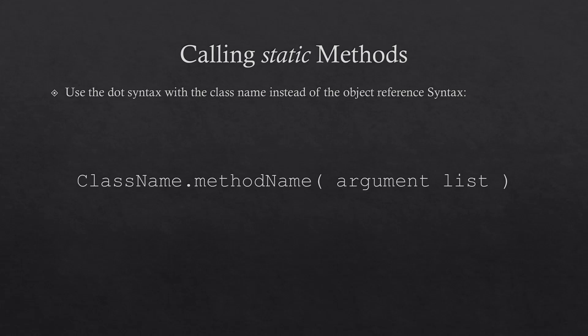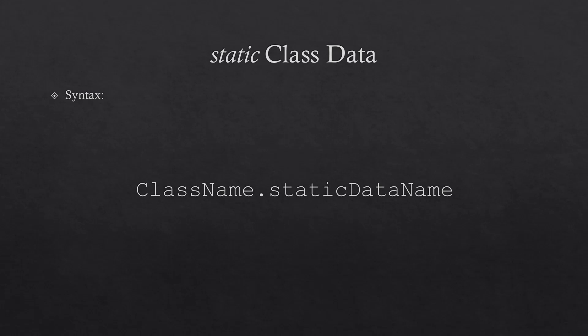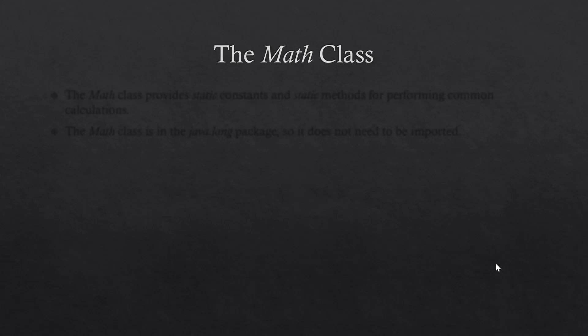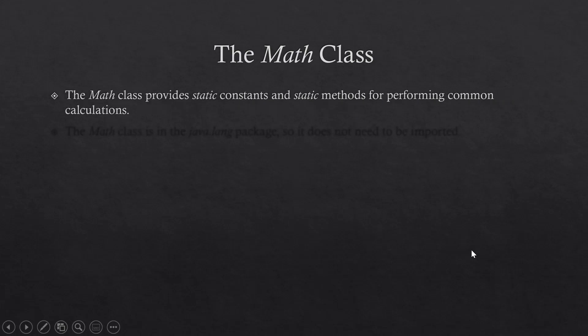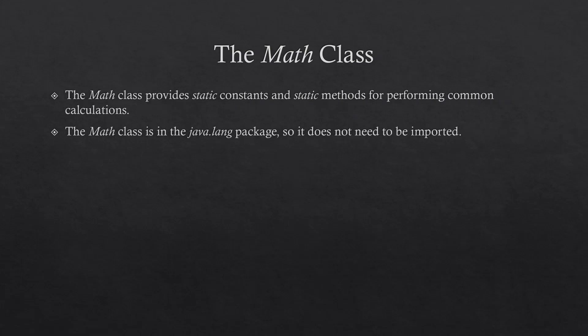Since methods are not the only members of our classes, we might also find some static class data. To access a static data element, we can use the class name dot the static data name. The Math class in Java provides us with static constants and static methods to perform common calculations. It is part of the java.lang package, so we do not need to import it into our program to be able to use it.